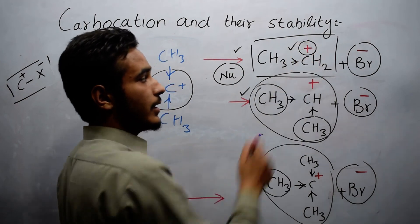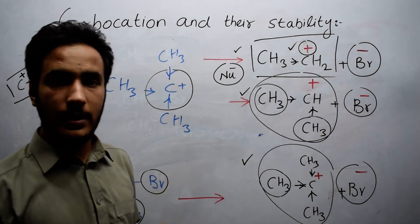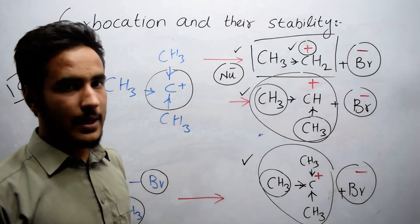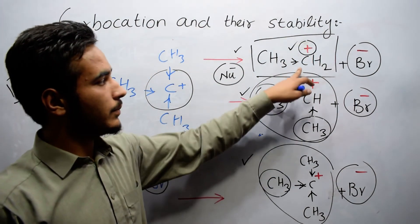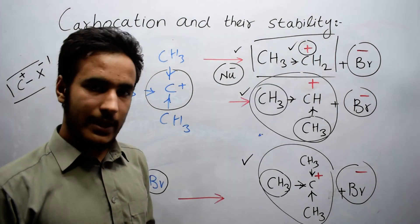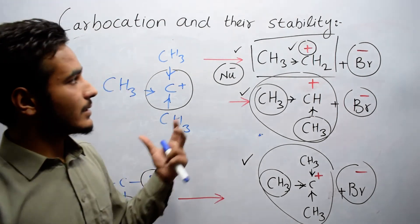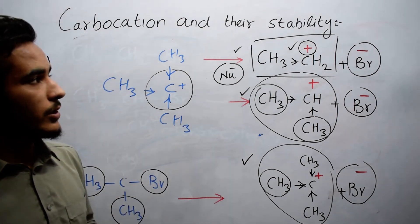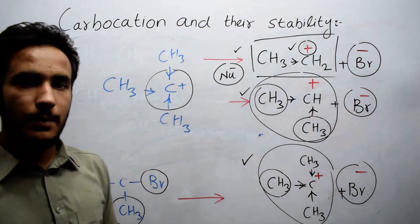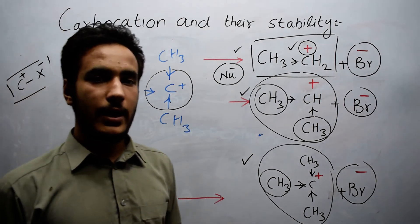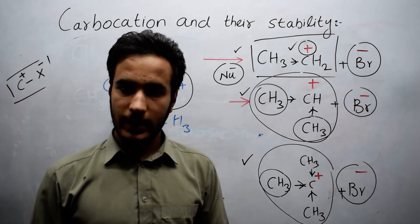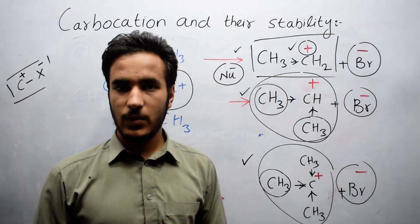A nucleophile can easily make a bond with the primary carbocation. This was a brief overview of carbocations and their stability. Thanks for watching.